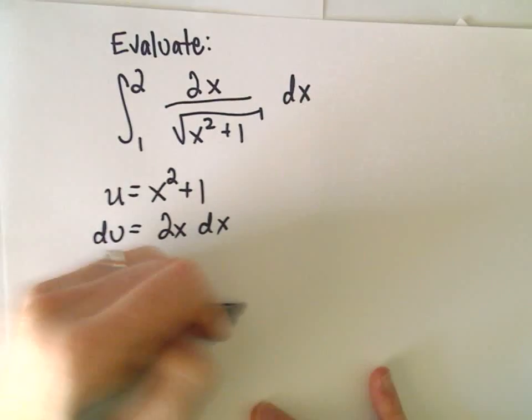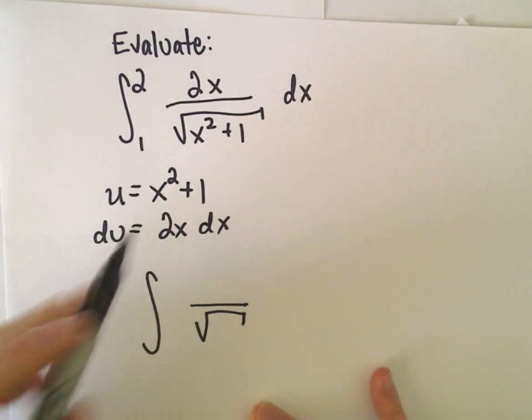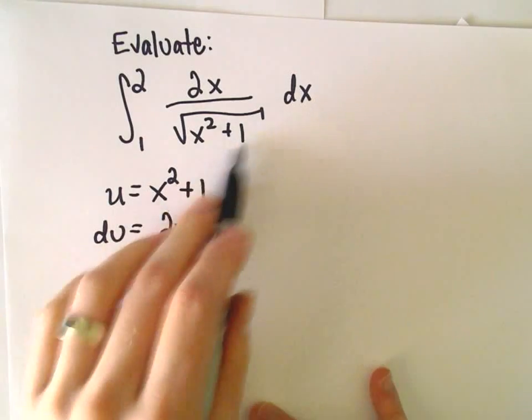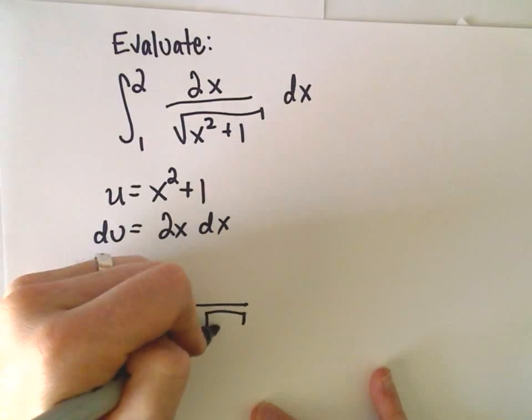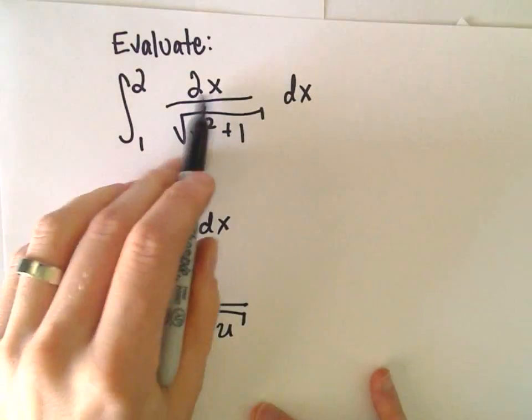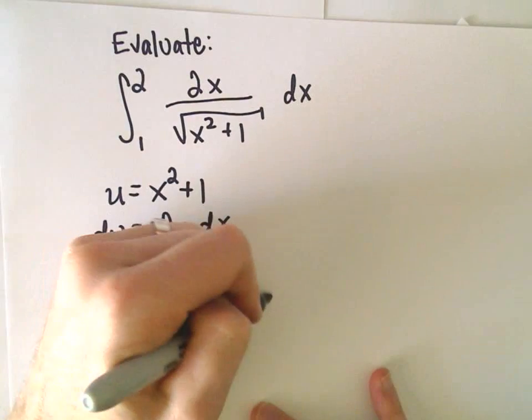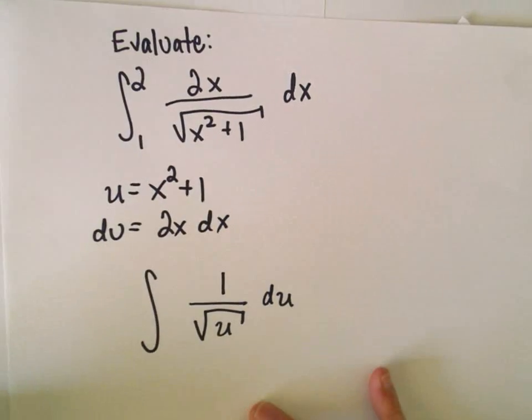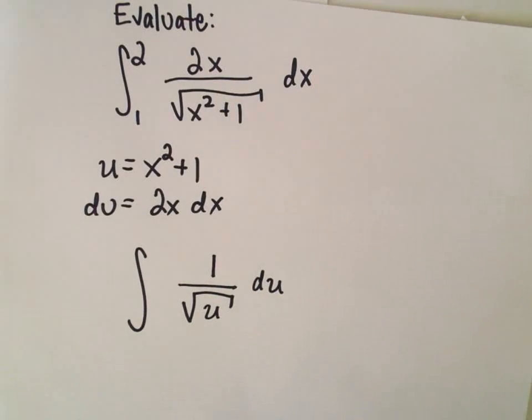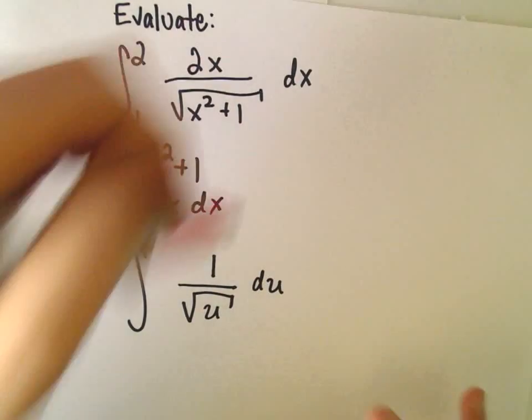So we'll come back to the limits of integration in just a second. So in the bottom we would have the square root of u. That's what we're calling x squared plus 1. 2x dx would get replaced by du. So I'm just going to pull that off to the side and put a 1 there. And what you should do now is calculate new limits of integration.